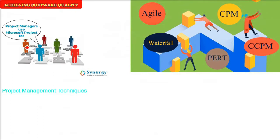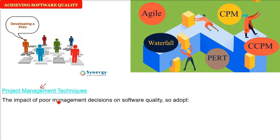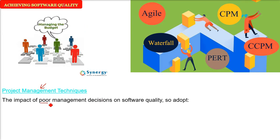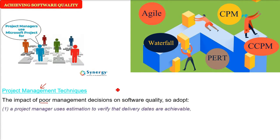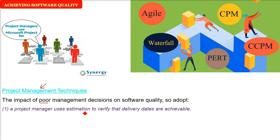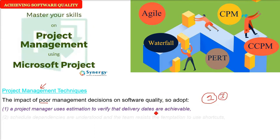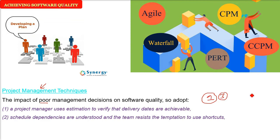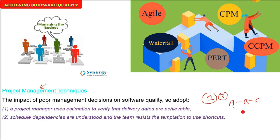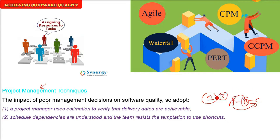The second thing is project management techniques. Your project manager or leader should use good, already established de facto practices. The impact of poor management decisions on software quality must be understood and avoided. The project manager should use estimation to verify that delivery dates are achievable and realistic, so the software team can deliver with quality. Schedule dependency — where one part is dependent on another — must be understood. The temptation to take shortcuts and just deliver fast should be avoided. Proper testing, proper verification, and validation should be done.